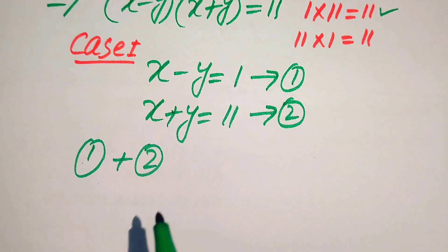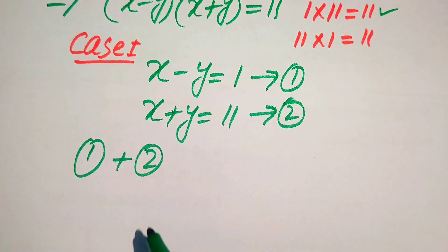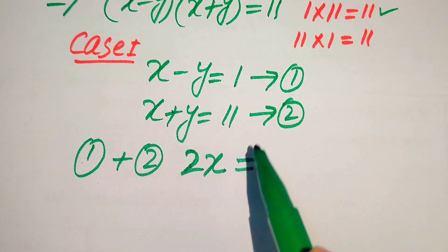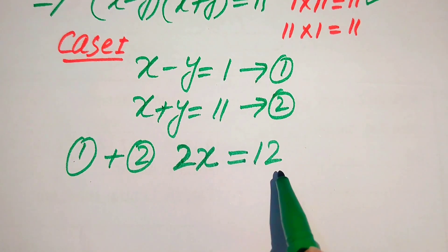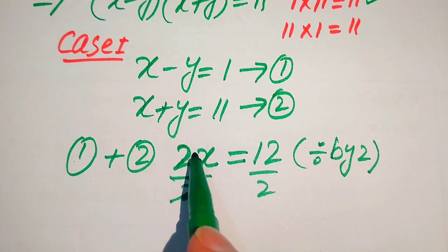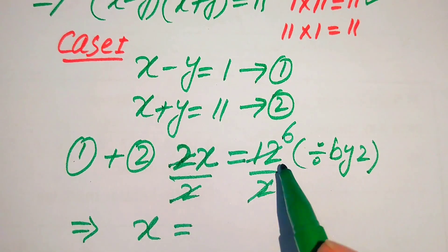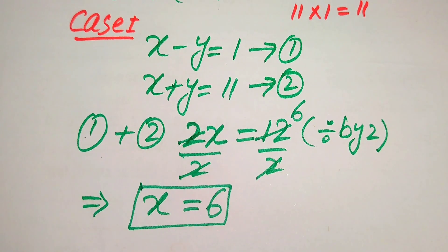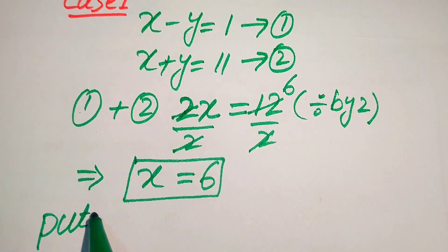To solve these 2 equations, we add equation 1 and equation 2. When we add them, the negative y and positive y cancel out. We get x plus x equals 2x, and 1 plus 11 equals 12. To find x, we divide both sides by 2, giving us x equals 6. We can see that 6 is a positive integer.